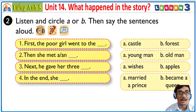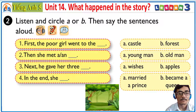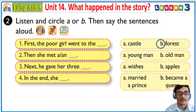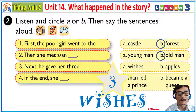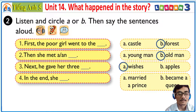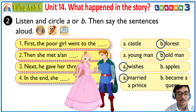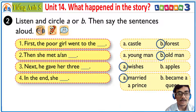Now, you listen and check with me. One: First, the poor girl went to the forest — the forest. So B is correct. Two: Then she met an old man — she met an old man. B again. Three: Next, he gave her three wishes — three wishes. So A is the correct answer. Four: In the end, she married a prince — she married a prince. So A is the correct answer again.